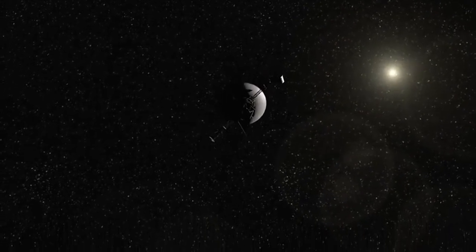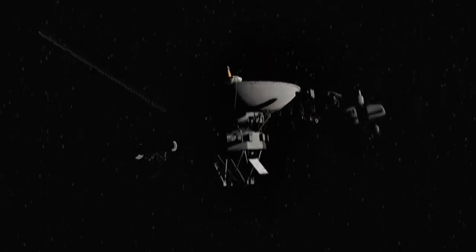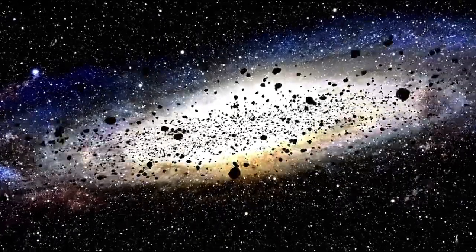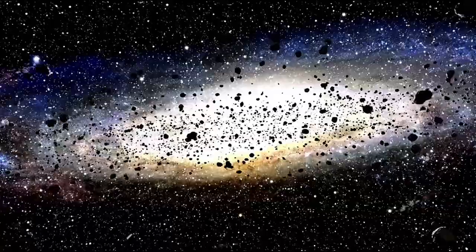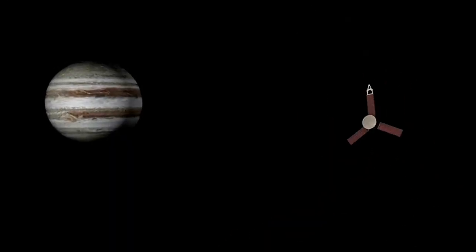Launched in 1977, Voyager 1 was built to last a few years, maybe a decade. Instead, it has endured for 45 years in the harshest environment imaginable. It flew past Jupiter, past Saturn, and then was flung outward by gravity into deep space beyond the pull of the planets.